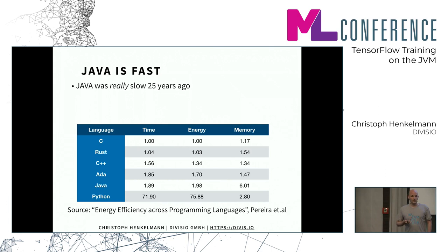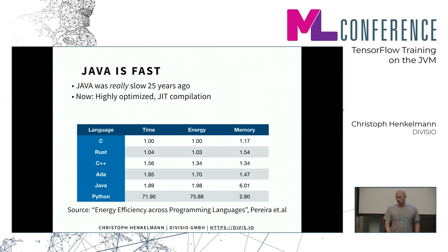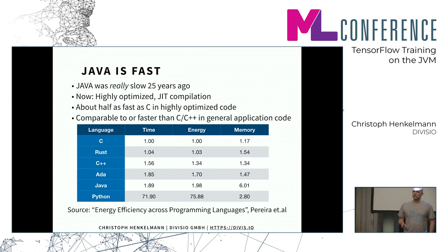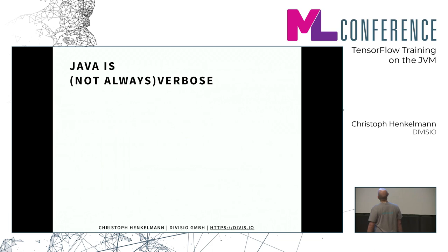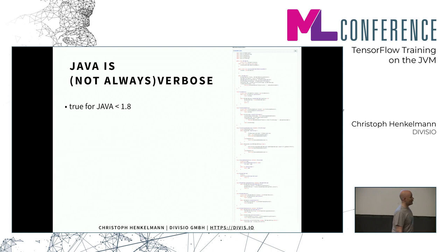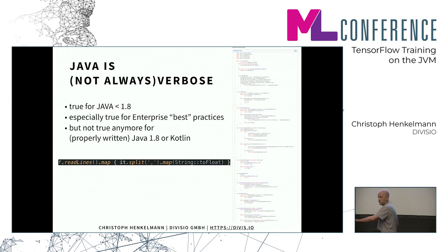Java was really slow 25 years ago — early virtual machines were bad interpreters on the Pentium. But by now we have highly optimized JIT compilation. In highly optimized code you get half of C performance, but for everyday programming tasks you're often faster than C++. We've experienced this in real projects where the Java prototype was actually faster than the C++ code.